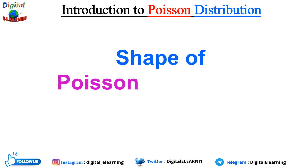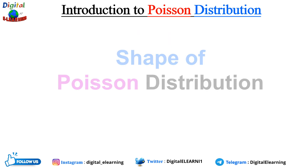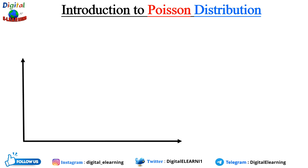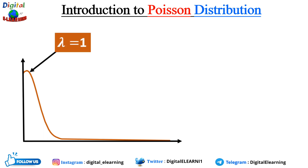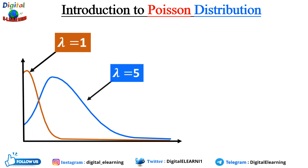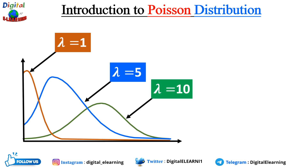The shape of the Poisson distribution depends upon the parameter lambda, which represents the average rate of events occurring in a fixed interval. When lambda is small — say lambda equals 1 — the distribution is skewed to the right with a long tail on the right side. As lambda increases from 5 to 10, the distribution becomes more symmetrical and bell-shaped, resembling the shape of a normal distribution.